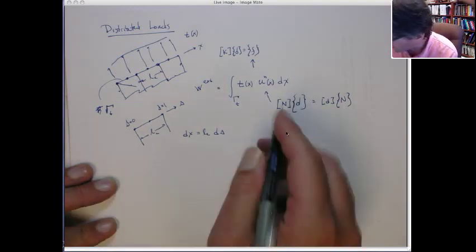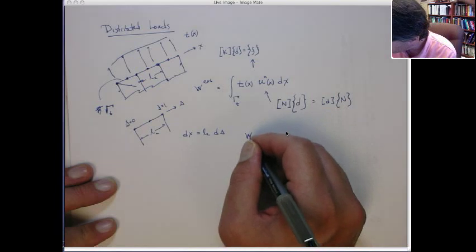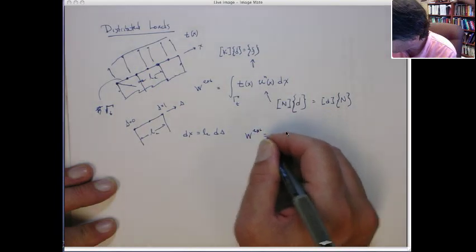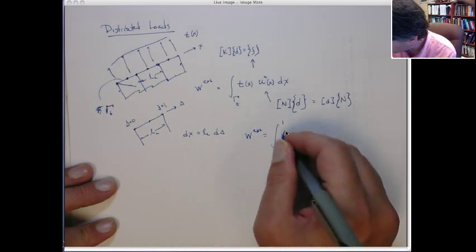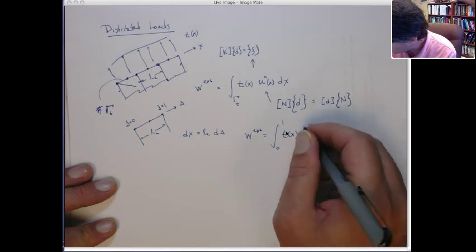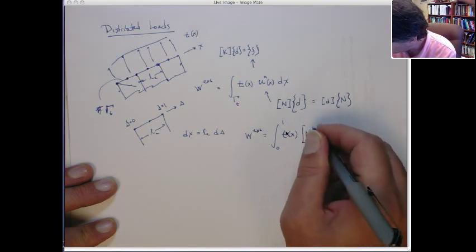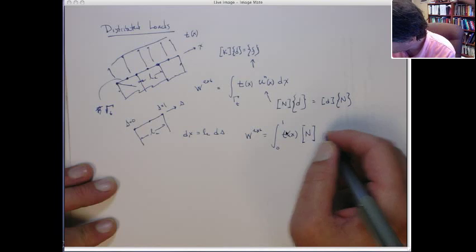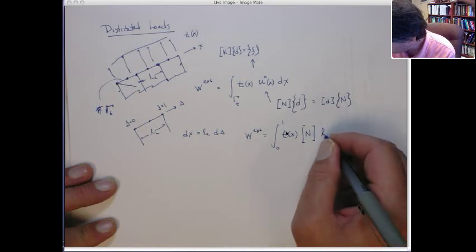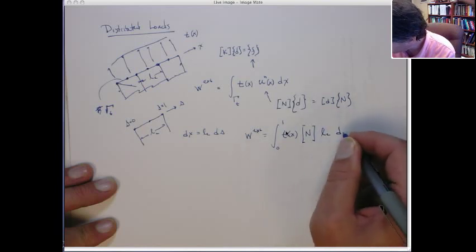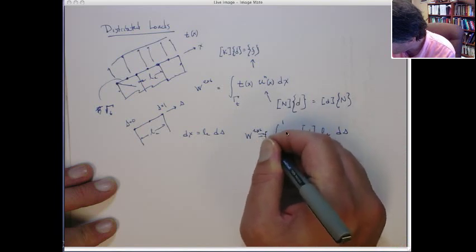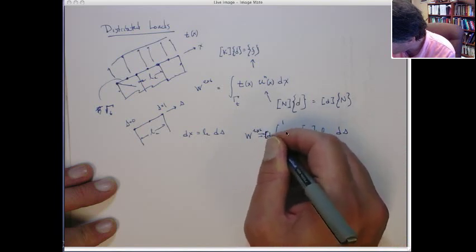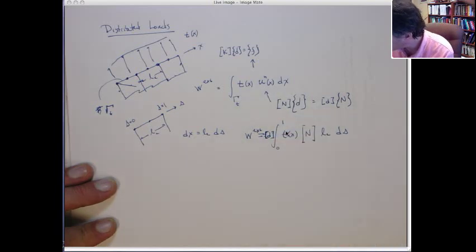So now we can transform this external work to be the integral from 0 to 1 of the known traction times the shape functions times the length of the element, dS, and out front, I'm going to pre-multiply by the nodal unknowns, okay?